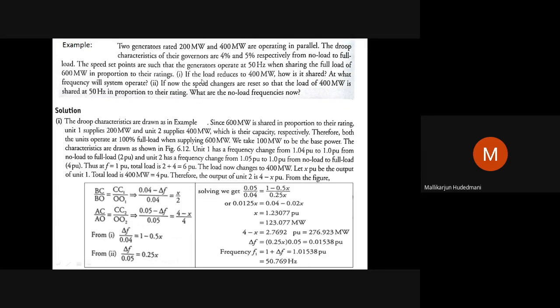If the load reduces from 600 MW to 400 MW: as load decrements, frequency shoots up — this is what we have to control. How is the 400 MW shared between the two machines, and at what frequency will the system operate? This is the problem studying load reduction and its effect on frequency.